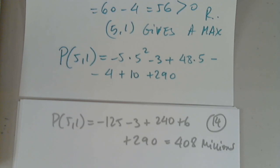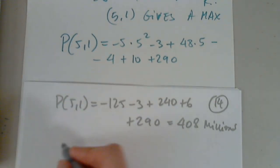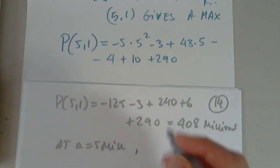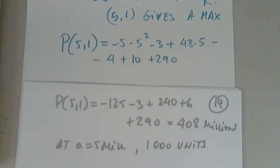Any questions? Okay. So let's also write at A equals 5 million, and 1 was 1,000 units. And that's where the maximum happens. Any questions for me? That's okay.